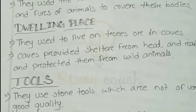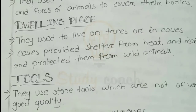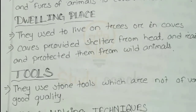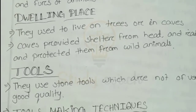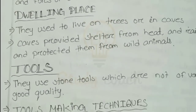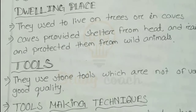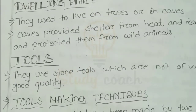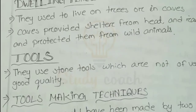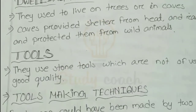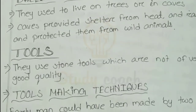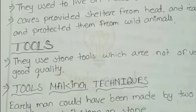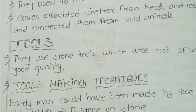Next, we discuss the tools, which are a main important topic. They used stone tools — obviously, they made their tools through stones. But these stones were not of very good quality because this is the starting point of tool-making, so the tools were not so developed. They had different kinds of techniques for making their tools with stones.